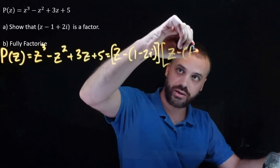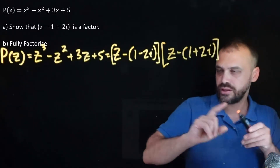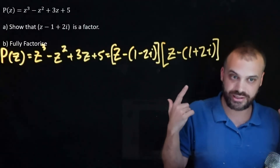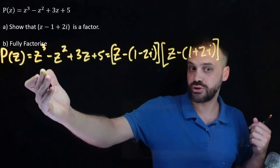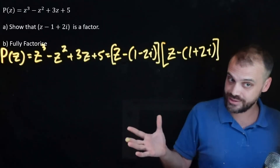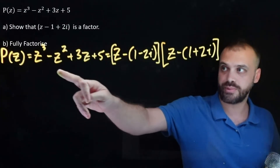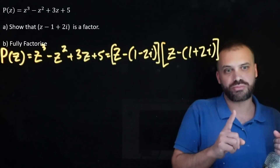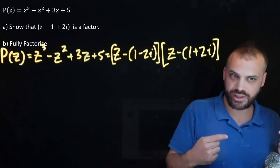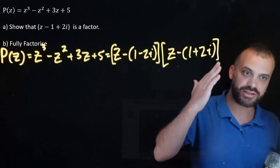Each of these is a linear factor. If I multiply those two factors together I get a quadratic, not a cubic. So I need another factor. This remaining factor must be linear, because the two complex factors together make a quadratic and I'm aiming for a cubic. But it must also be real — because if it were complex it would need a conjugate pair to go with it. I only have one factor left, so this factor must be real.